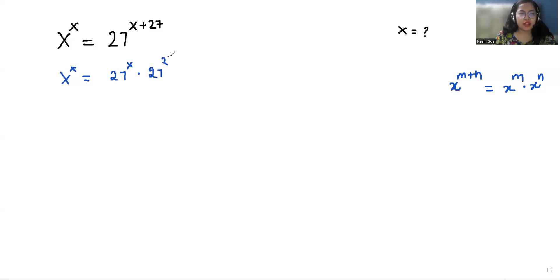Now I'm going to divide with 27 power x both sides, so you can cancel out here, and we can write this as x by 27 whole power x equals 27 power 27.